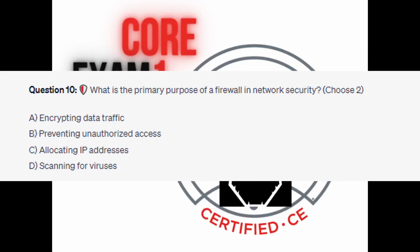And for the last question of our exam, question number 10. What is the primary purpose of a firewall in network security? Choose two. Is it A: Encrypting data traffic. Is it B: Preventing unauthorized access. Is it C: Allocating IP addresses. Or is it D: Scanning for viruses. You now have 5 seconds.